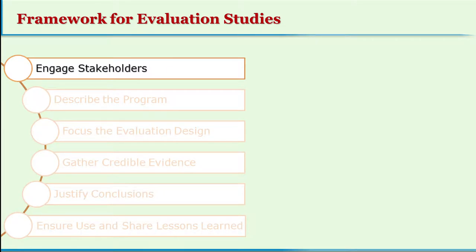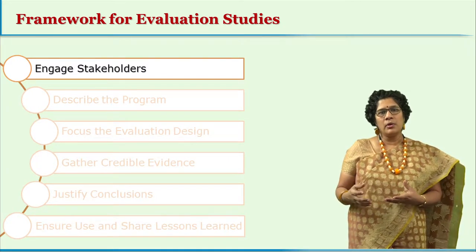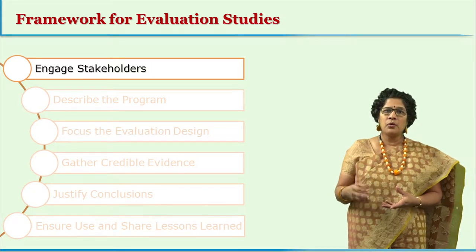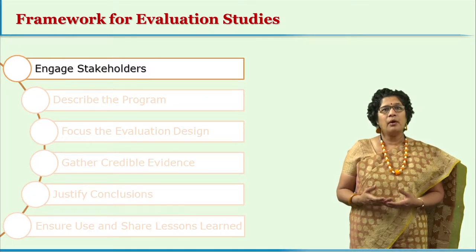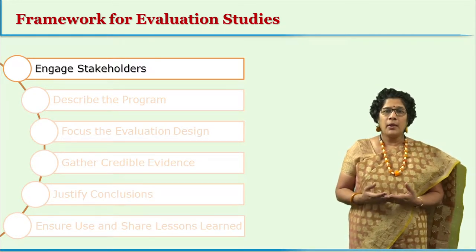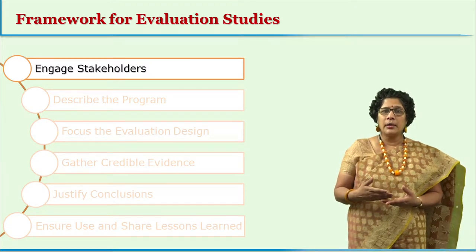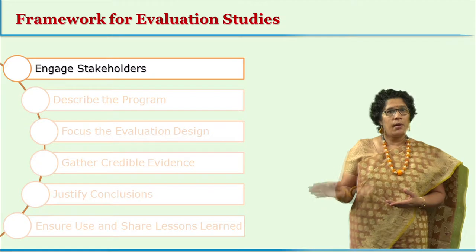The first step is engaging stakeholders. Before the program evaluation is taken up, the stakeholders — that is, the people for whom the program evaluation and its findings are going to be important — are well informed about the study being conducted. One cannot keep them in the dark and then conduct the study; they should be well aware of what is happening.